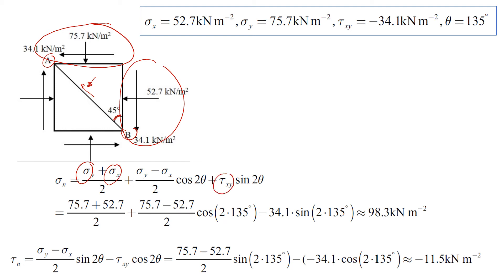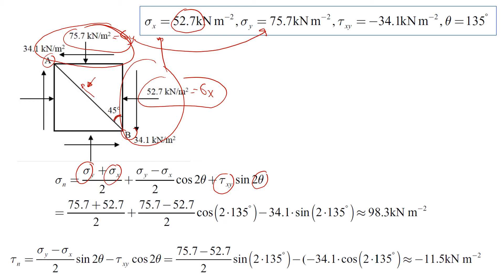We start by defining the variables: sigma y, sigma x, tau xy, and angle theta. The compressive stresses are all positive; this one is sigma x — a very large value of 52.7 — and we also have an even larger sigma y. For the shear stress, we always take the stress on the right hand side; it acts in the clockwise direction, so it's going to be negative: tau xy = negative 34.1.